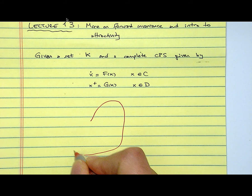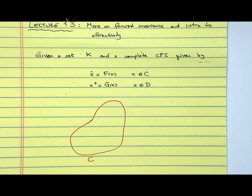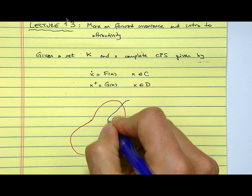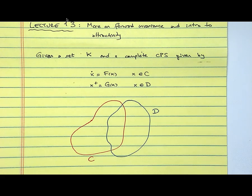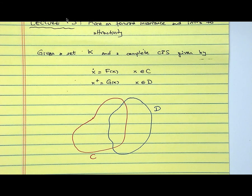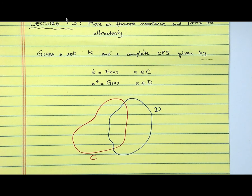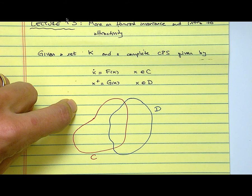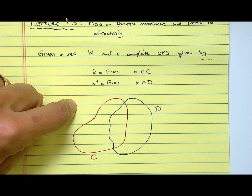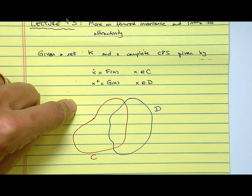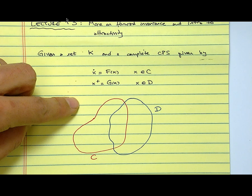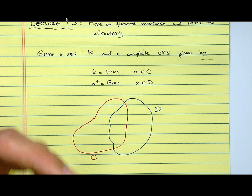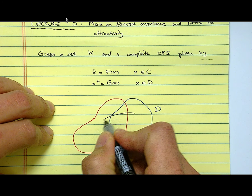We can think about invariance of this set in a pictorial way. So let me denote by this my set C. Again, this could be very specific in your application. I will denote this as my set D, where the events occur. And now I'm going to pick a set K.